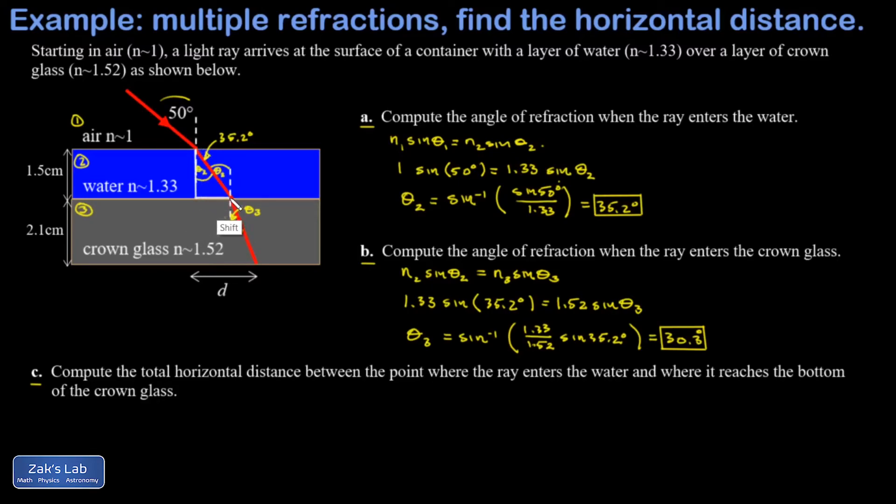We know the vertical leg of this triangle is 1.5 centimeters—that's the thickness of that layer of water—and we know the angle theta 2 is 35.2 degrees. Now we're just trying to find the opposite side of a right triangle when we know the adjacent side.